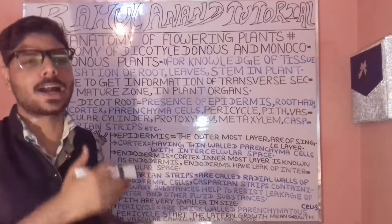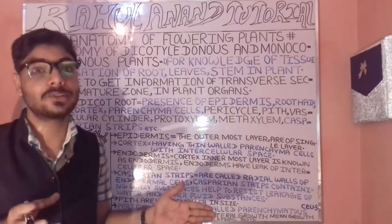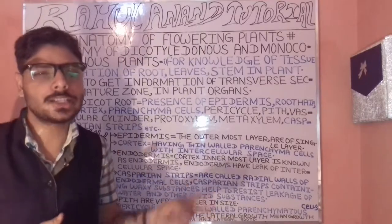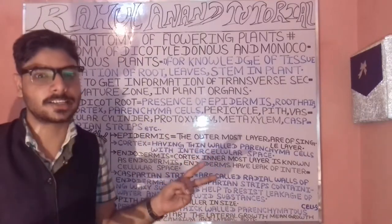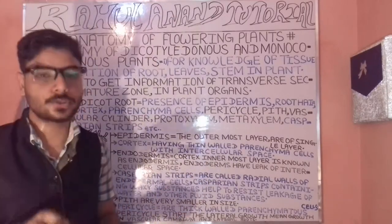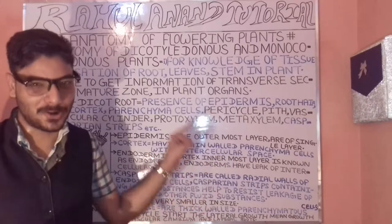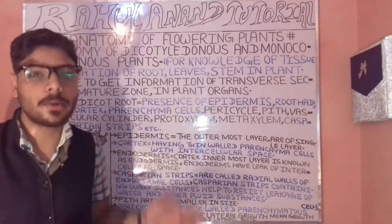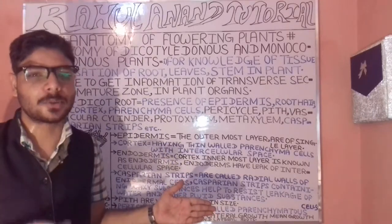When we talk about monocot and dicot, these are divided into two broad categories: monocot and dicot. Primarily, we will be understanding about the root first. When talking about the root, you will find several types of components in it.